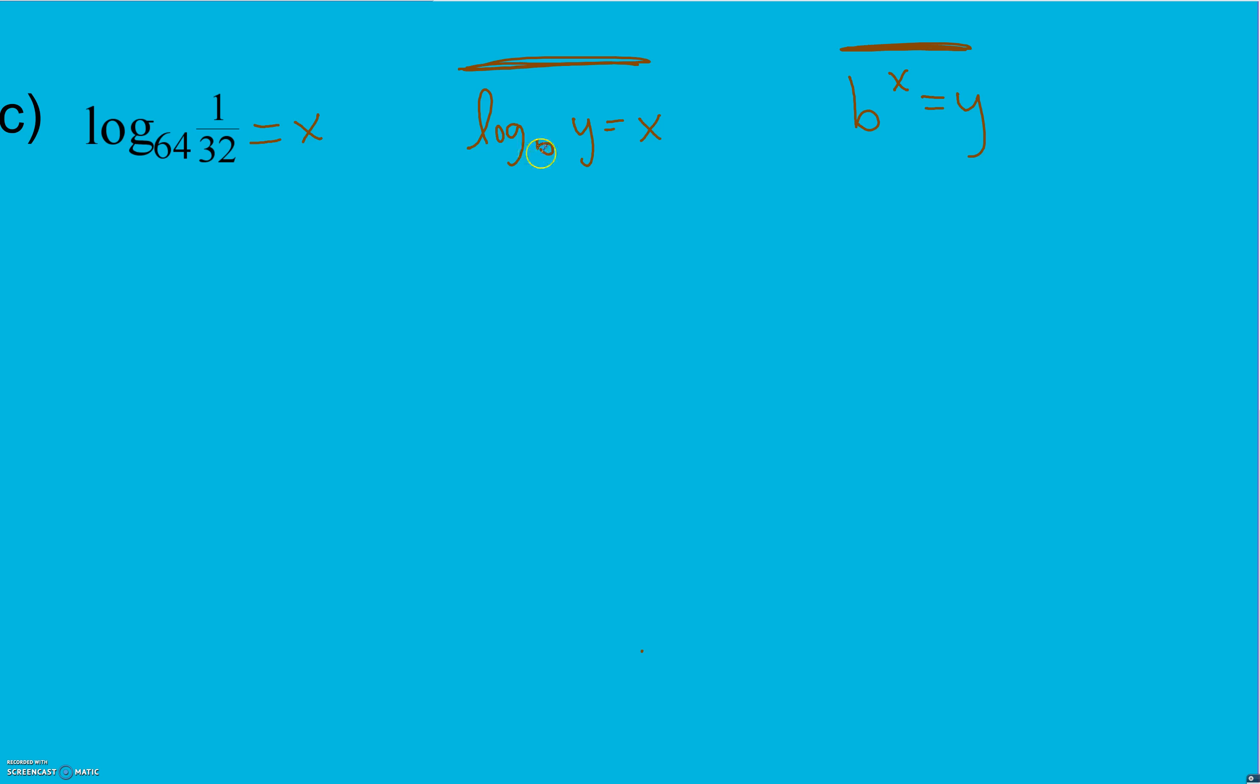Using those two things, we know that b is 64, we know y is 1 over 32. We're going to plug those into our formula. And we have b is 64, x we don't know, that's what we're looking for. Remember, logarithms are exponents, so that's where our x comes into play. And y we said is 1 over 32.